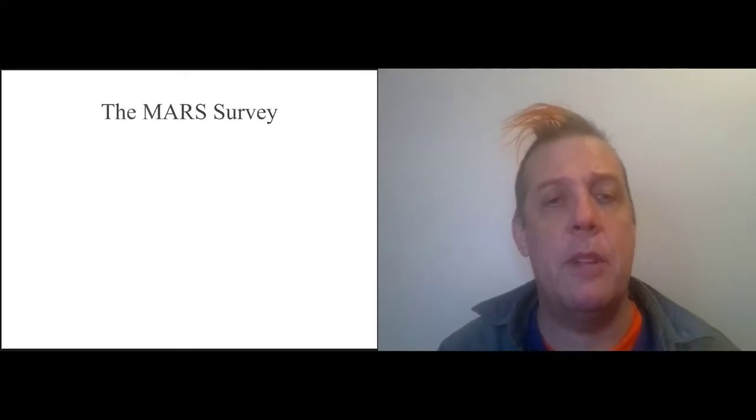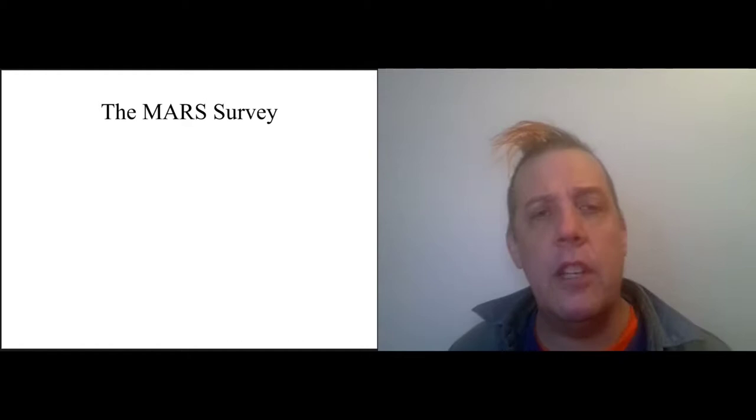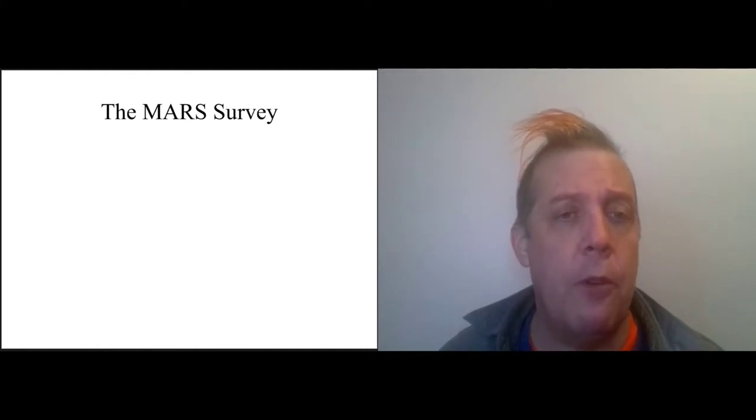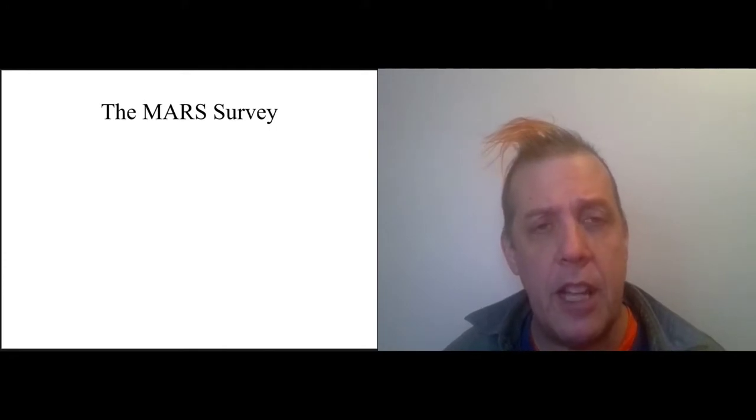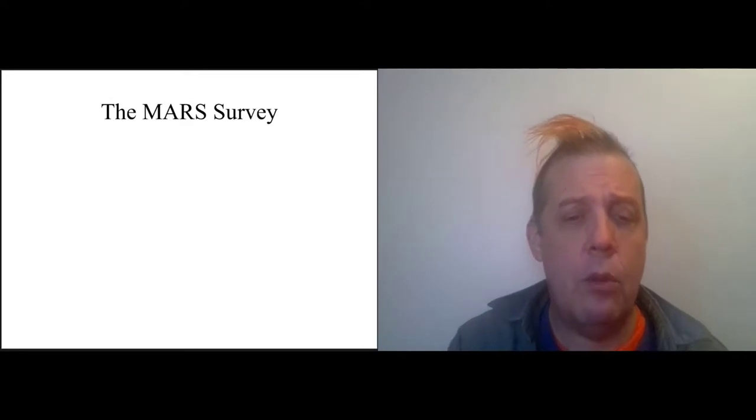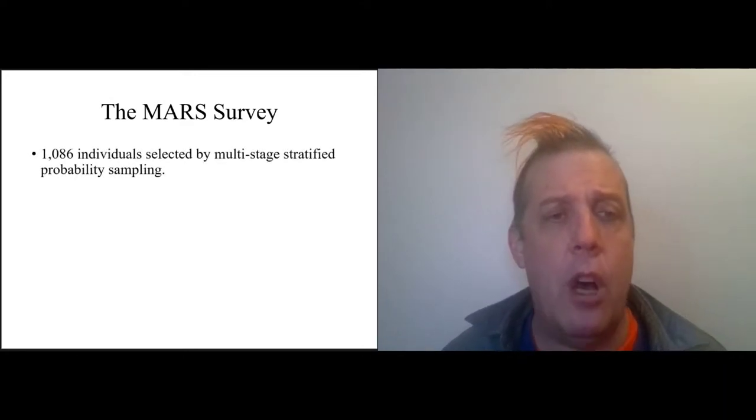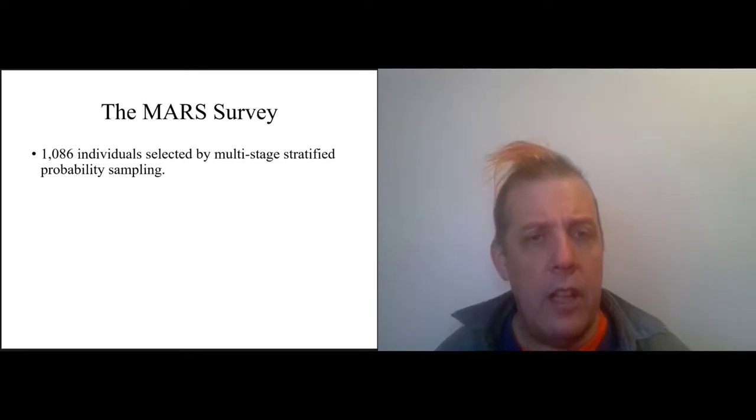So the information that Desmond and Gershenson are using is taken from the MARS survey, and we've seen this before in Desmond and Schulenberger. This is the foundational bit of statistical research that Matthew Desmond and his colleagues did while writing Evicted.